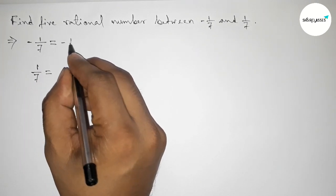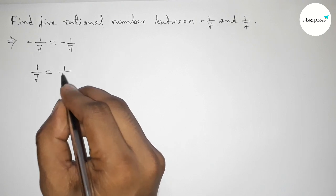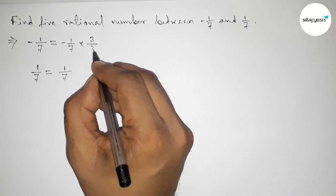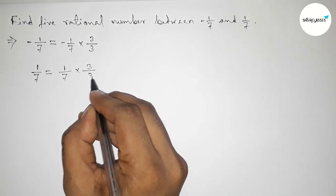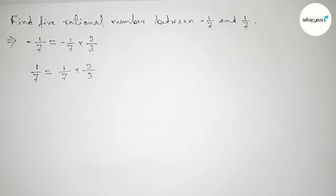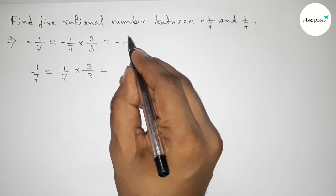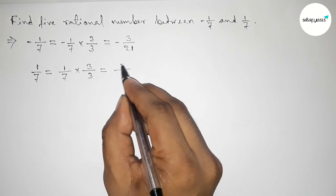Now doing some important calculation. For 5 rational numbers, we have to multiply both numbers by 3 up and down. So now simplifying this, we get -3/21 and this is 3/21.